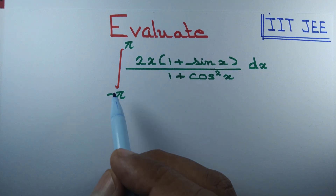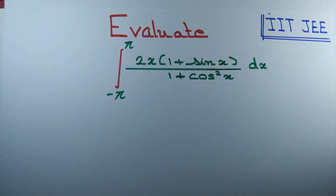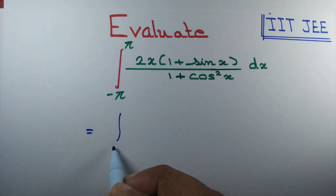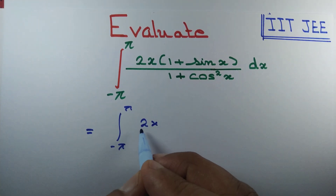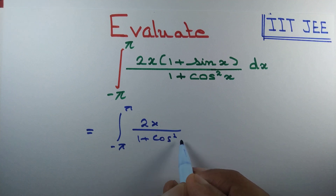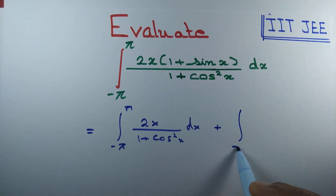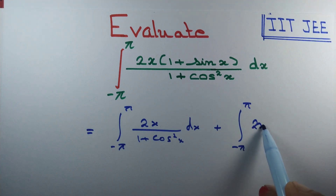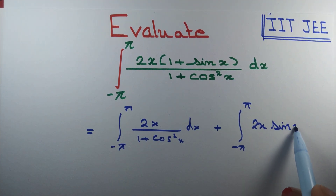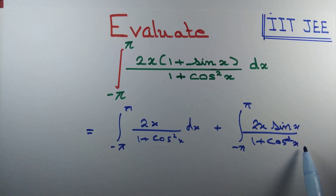Let us evaluate the integral from minus pi to pi of 2x times (1 + sin x) divided by (1 + cos squared x) dx. It's a bit complicated, so let's break it into the sum of two integrals: integral from minus pi to pi of 2x divided by (1 + cos squared x) dx, plus integral from minus pi to pi of 2x sin x divided by (1 + cos squared x) dx.